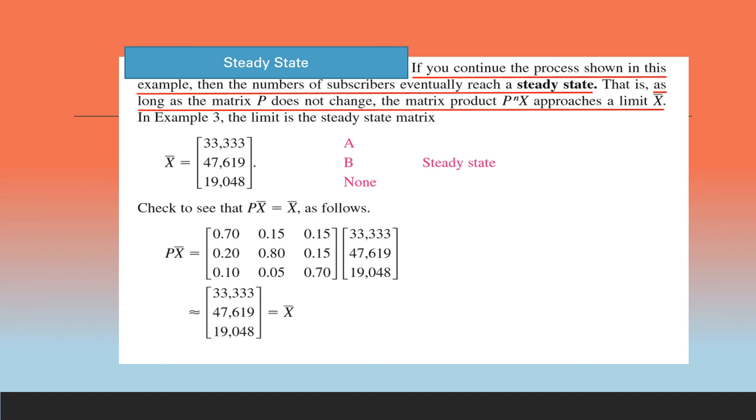Now, if we want to prove that this is the steady state, we can easily check this result by seeing whether X bar satisfies this result, P X bar equal to X bar. That is, after getting this X bar, if I multiply by P, that value must be still the same.